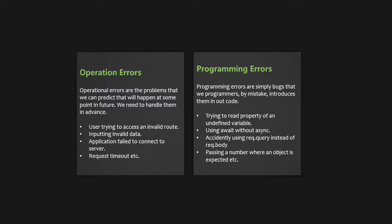For example, a user might try to access an invalid route, so we need to handle such actions by the user. In the same way, if the user is inputting some invalid data, that also we need to handle from our application. Another example would be when the application fails to connect to the server or the database, or when a request times out. All these are examples of operational errors, and they are also sometimes called exceptions.